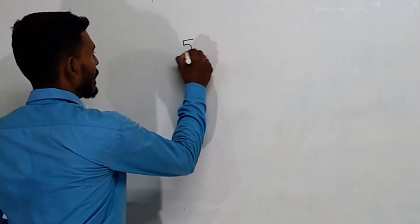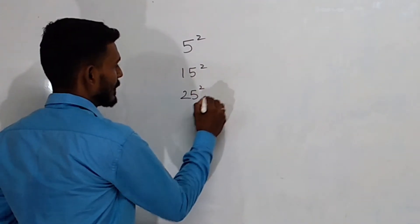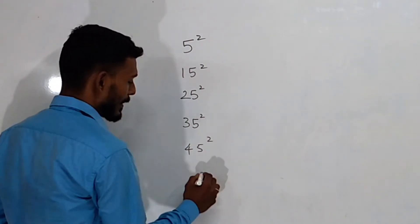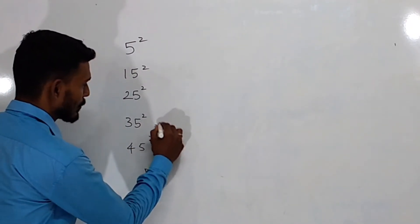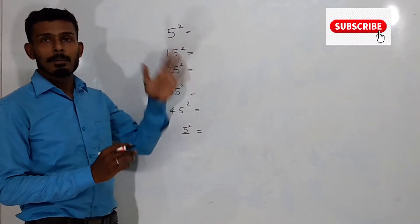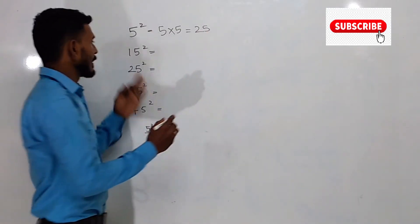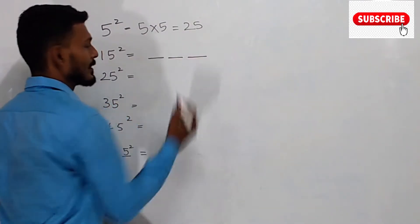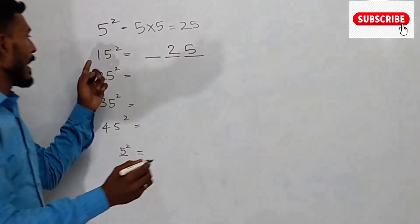5 square, 15 square, 25 square, 35 square, 45 square — the last digit is always 5. From what power to do: 2x is 2.